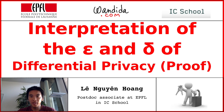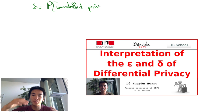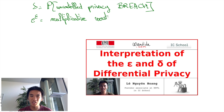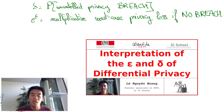In a previous video, we discussed the interpretations of the epsilons and deltas of differential privacy. In short, delta is the probability of uncontrolled privacy breach and should be exponentially small, while epsilon is the multiplicative factor by which an attacker can learn from the differentially private mechanism when there is no uncontrolled privacy breach. In particular, it is very much fine if epsilon is around 1,